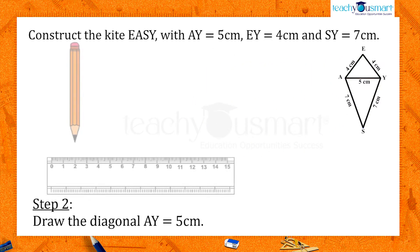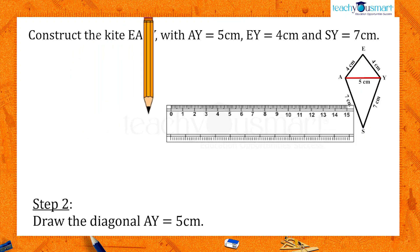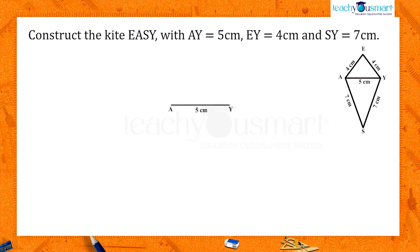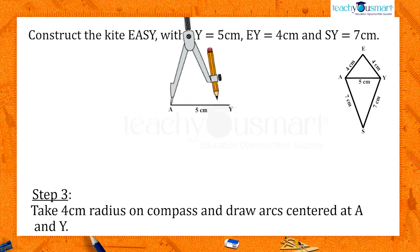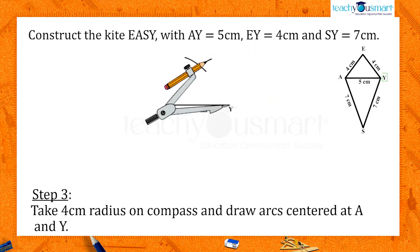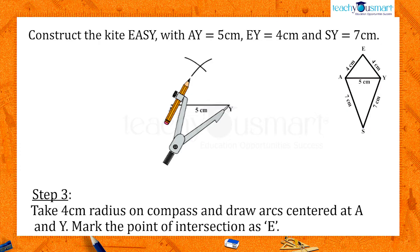Now let's start with the diagonal AY. Now we have to locate the points E and S. E is 4 cm away from both A and Y. So take 4 cm radius on compass and draw arcs centered at A and Y. The point of intersection of these two arcs is the required point E.